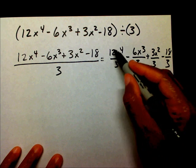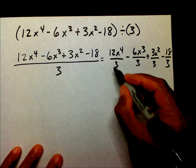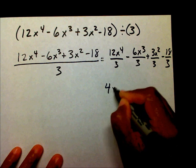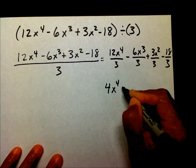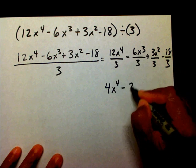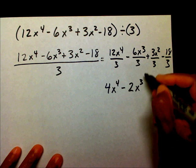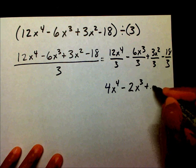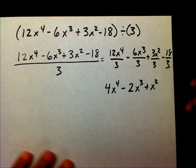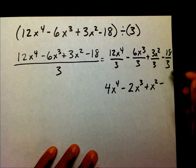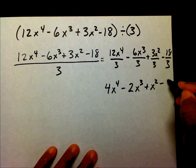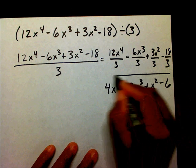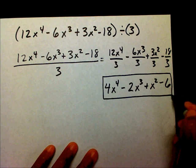Now I'm going to divide each term. 12 divided by 3 is 4, so 4x to the 4th. 6 divided by 3 is 2, so 2x to the 3rd. 3 divided by 3 is 1x squared, or just x squared. And 18 divided by 3 is 6. And here's your final answer that you should have received.